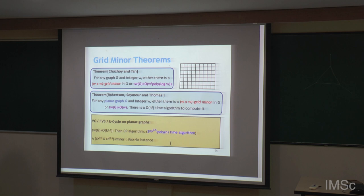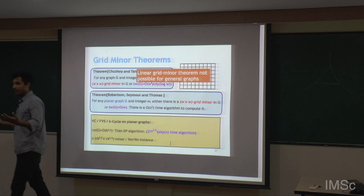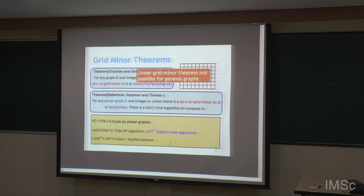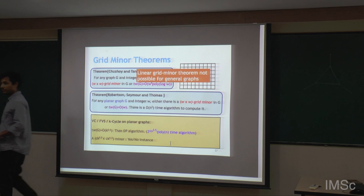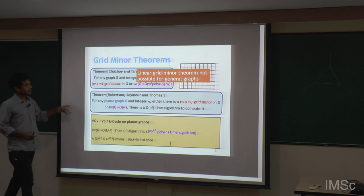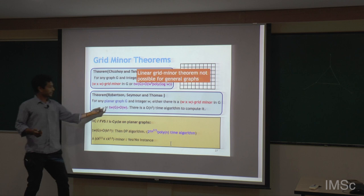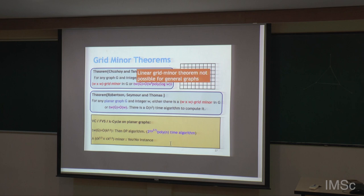A linear grid minor theorem is not possible for general graphs — look at a large clique: a W-size clique has tree width O(W) but the largest grid minor you can get is only √W × √W. So the minimum is W^2 there. Can we use, instead of tree width as a measure, something like a structured tree decomposition together with a grid minor theorem?